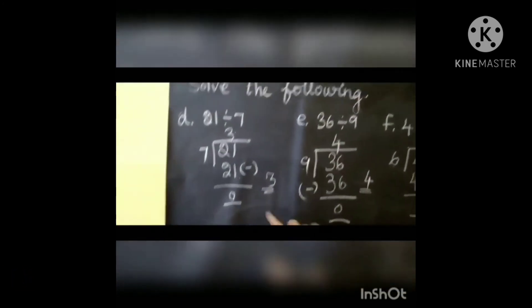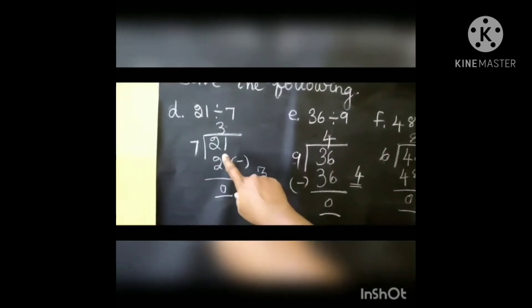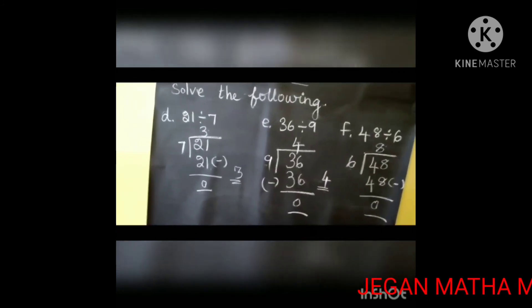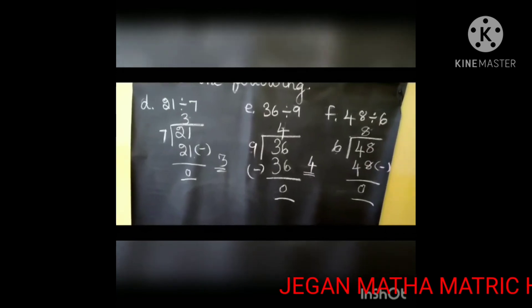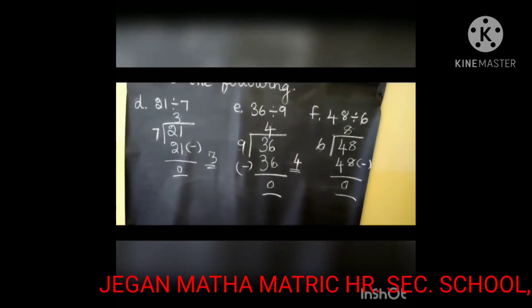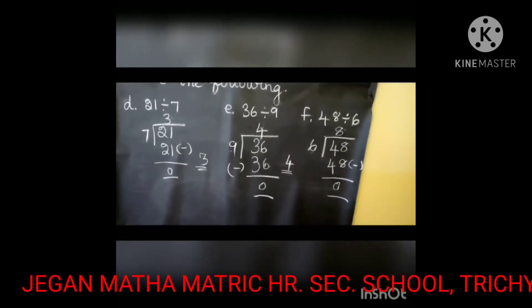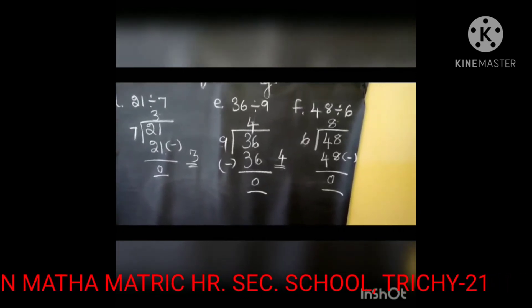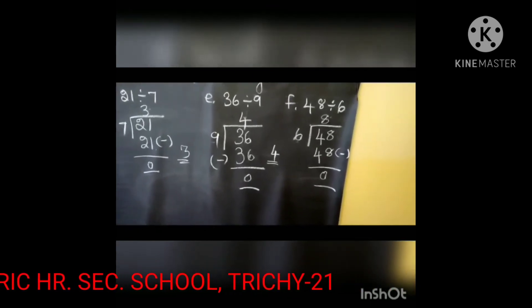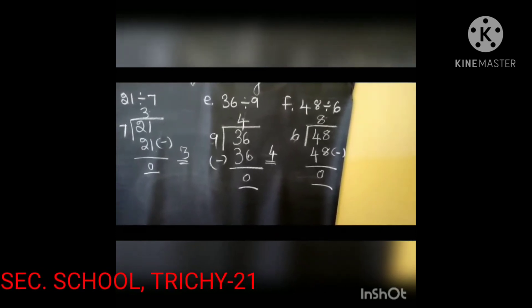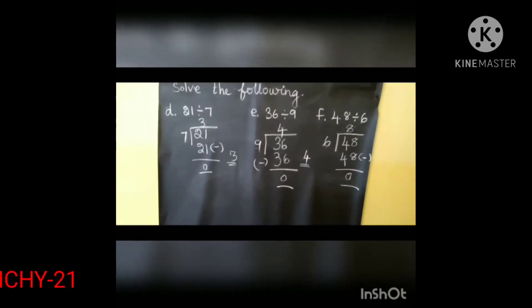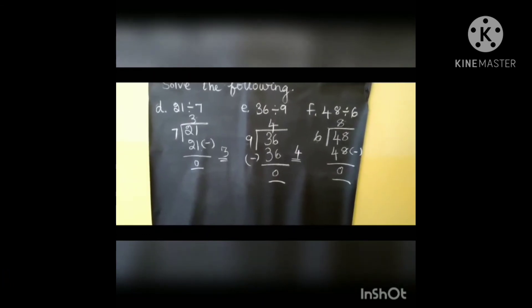Once again, let me explain. Listen carefully. 21 divided by 7 — in the 7 table, 7 3's are 21, so the answer is 3. Next: 36 divided by 9 — in the 9 table, 9 4's are 36, so 36 minus 36 is 0, final answer is 4. 48 divided by 6 — in the 6 table, 6 8's are 48, so 48 minus 48 is 0. Okay, that's all children. I hope you all have understood these division sums in your observation book. Thank you for listening.